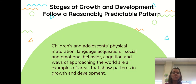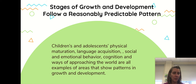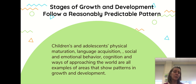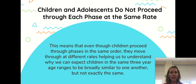It talks about the stages of growth and development following a reasonably predictable pattern. Children's and adolescents' physical maturation, language acquisition, social and emotional behavior, cognition, and ways of approaching the world are all areas of development that show patterns. You've probably heard of the terrible twos — why are they terrible? And some people say, my child didn't have terrible twos, they had terrible threes. This talks about how the pattern is predictable even if children go through those patterns at different rates.